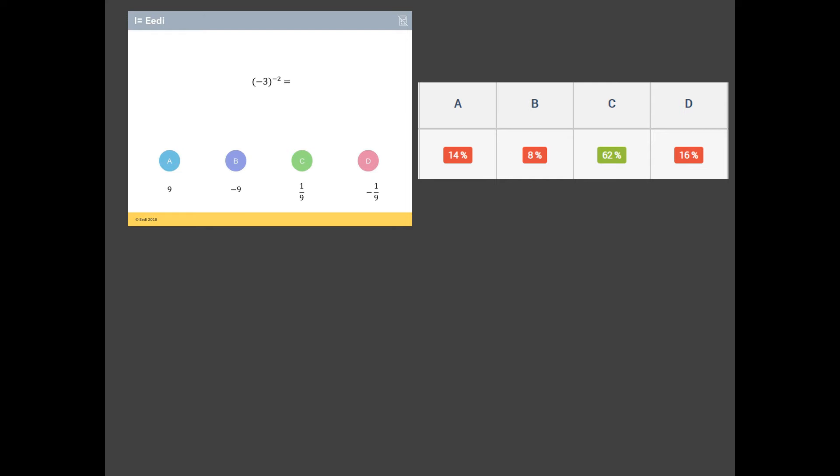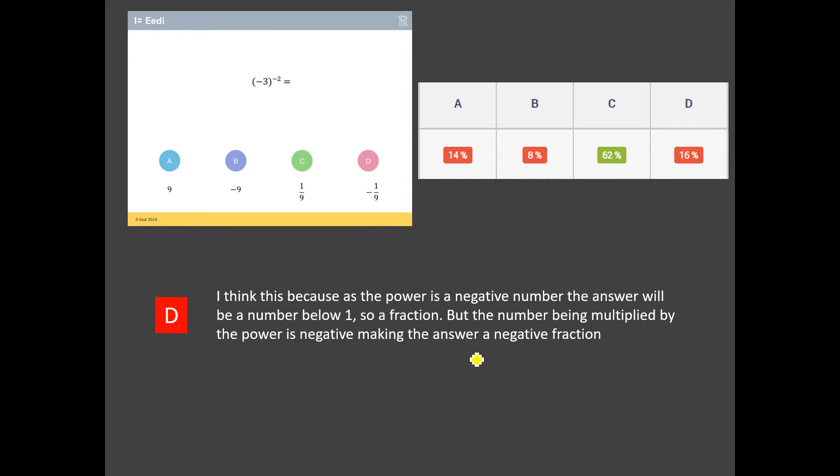But as we'll read from this student here, we've got an issue here. Number multiplied by the power is negative, making the answer negative. No, that negative in the power is nothing to do with making answers negative. It's all to do with the reciprocal.